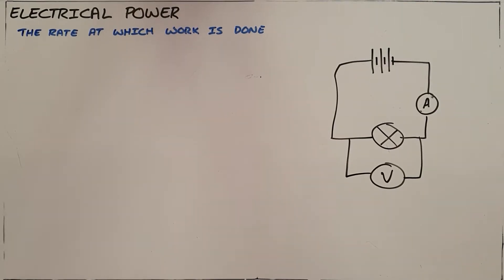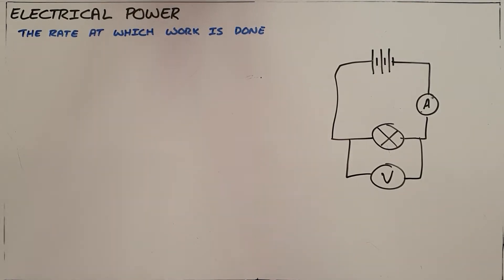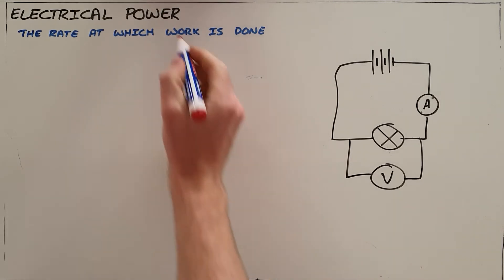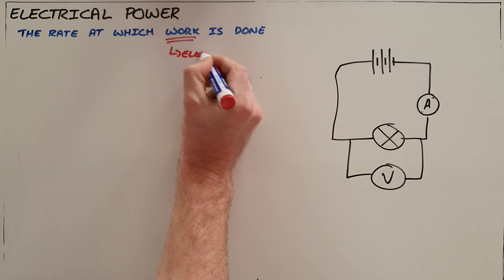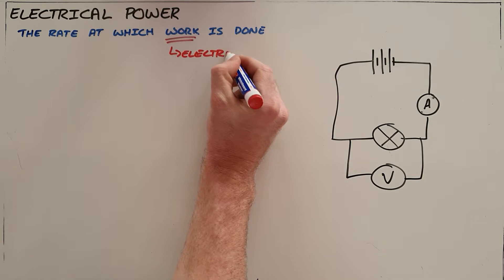Power is the rate at which work is done, and specifically electrical power when we are talking about the work that is being done here. We know that is a conversion from electrical energy into some other form of useful energy.